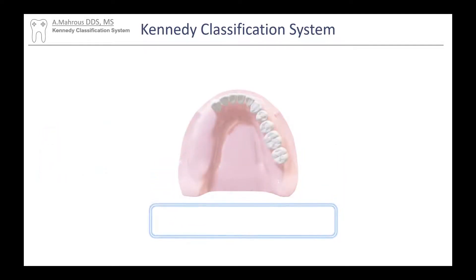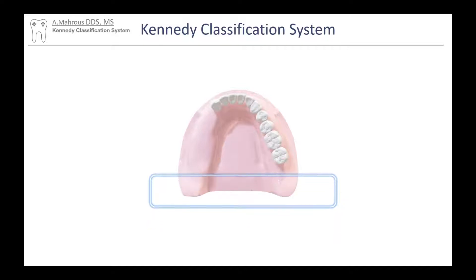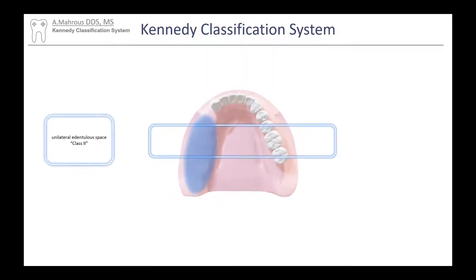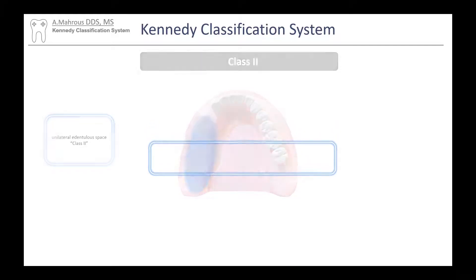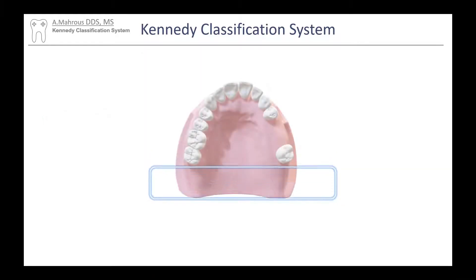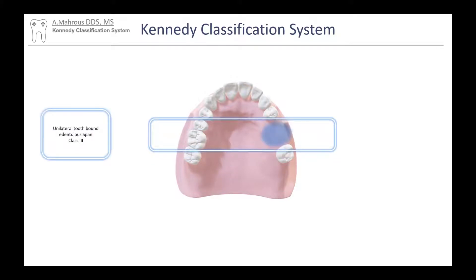Let's change it up. Beginning from the posterior aspect moving forward, we encounter just one space on one side with no teeth in the back. The other side has teeth and is dentate, so this will be classified as a Class 2. Next, the first space we see is bounded by teeth on both sides — a unilateral bounded edentulous span — that is a Class 3.